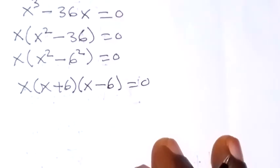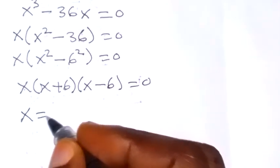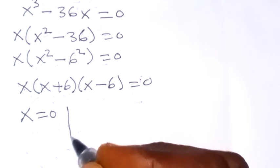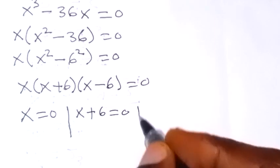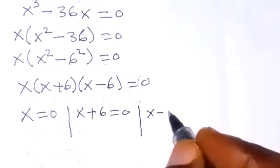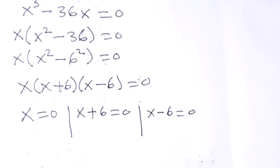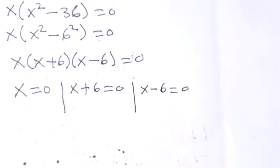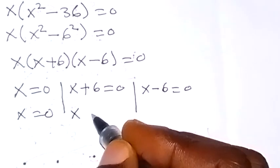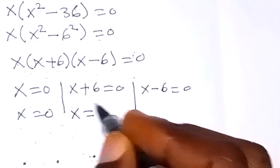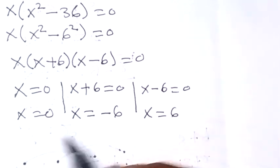We have 3 possible cases here: x equals to 0, or x plus 6 equals to 0, or x minus 6 equals to 0. Solving these gives x equals to 0, x equals to minus 6, and x equals to 6.